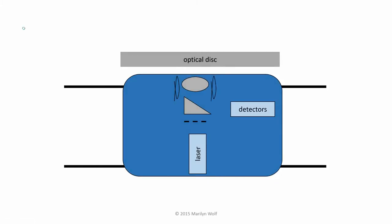The optical system itself has a laser and a diffraction grating to help focus the laser. In addition to the diffraction grating, there's a separate lens that is controlled by electromagnets to adjust its focus. The laser shines through this optical system, is reflected off the optical disc, and goes back into a set of detectors. We use those detectors to determine both the focus of the laser and the tracking along the disc.